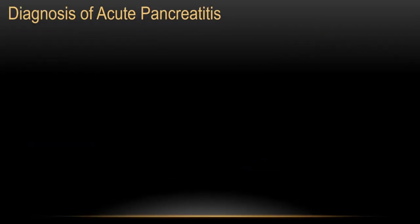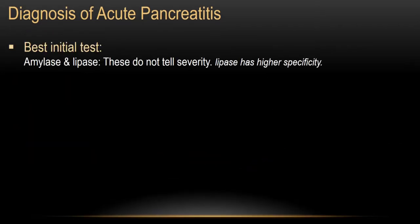How do you diagnose acute pancreatitis? You suspect it by the abdominal pain — epigastric pain and tenderness. Usually this pain radiates to the back, is alleviated by leaning forward, and is worsened by lying on the back. The best initial test is amylase and lipase. These are pancreatic enzymes. Amylase can also come from the salivary glands, so lipase has higher specificity.